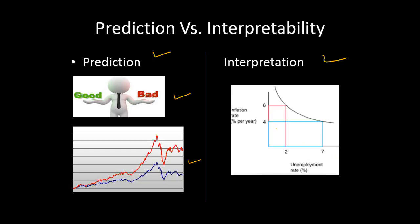For example, we have two important attributes: one is inflation and the other is unemployment. We would like to know how unemployment is related to inflation, and if inflation goes up by a certain percentage, what is going to be its impact on unemployment.